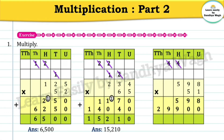Now let's add these numbers: eight plus zero is eight; nine plus zero is nine; five plus nine is fourteen, so we write 4 in the hundreds place and carry one into the thousands place. Nine plus one is ten, write zero and carry one. Two plus one is three. Our final answer is 30,498.